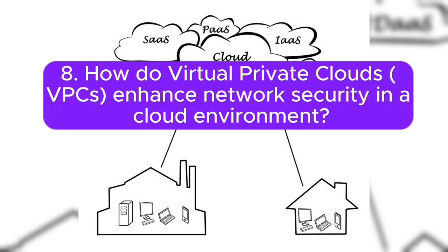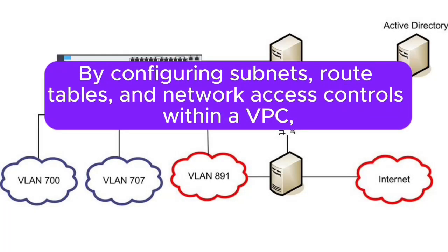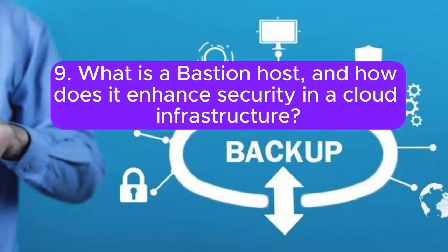8. How do virtual private clouds (VPCs) enhance network security in a cloud environment? VPCs provide a logically isolated section of the cloud where you can launch resources. By configuring subnets, route tables, and network access controls within a VPC, you can create a secure and controlled network environment.